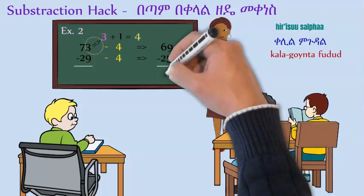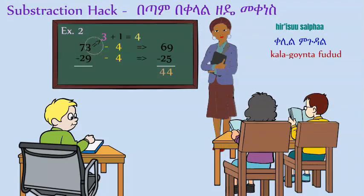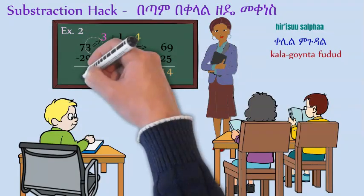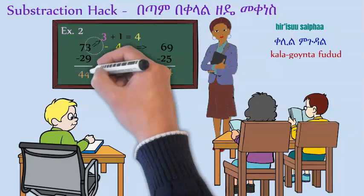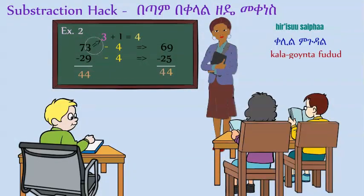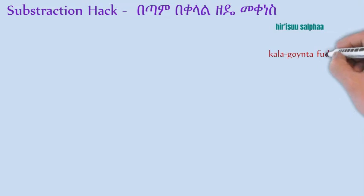So that is our answer. 73 minus 29 is 44. From 73, we take three and add one to it, and we subtract that four from both 73 and 29. Simple.